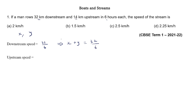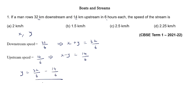Upstream speed is distance divided by time, so it is 14 by 6. Upstream speed is x minus y equal to 14 by 6. From this we can find the speed of stream: speed of stream equals downstream speed minus upstream speed divided by 2. So it is 32 by 6 minus 14 by 6, all divided by 2. This equals 18 by 6 into 2, which is 18 by 12, giving us 3 by 2, which is 1.5 km/h. So the correct option is option B.